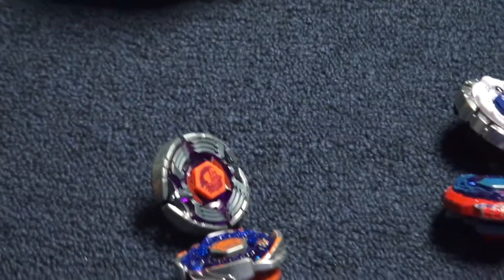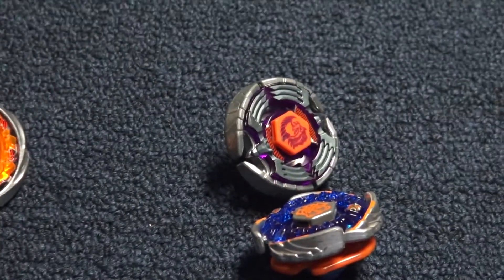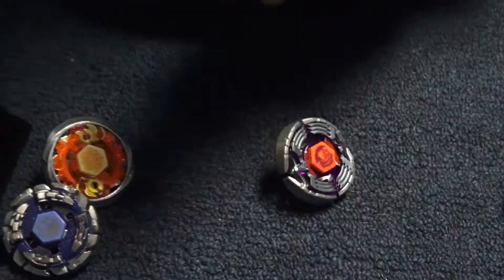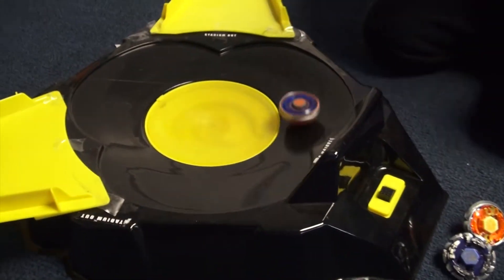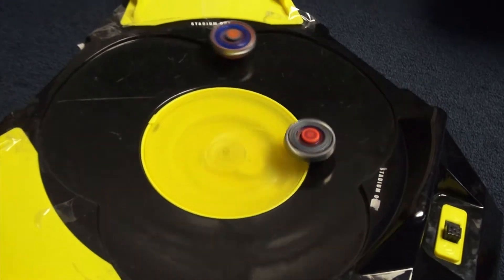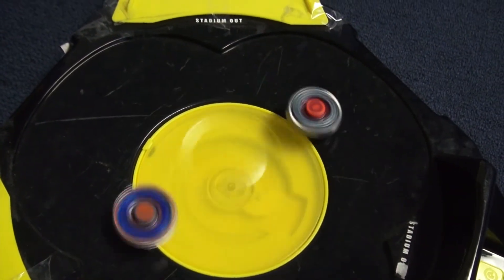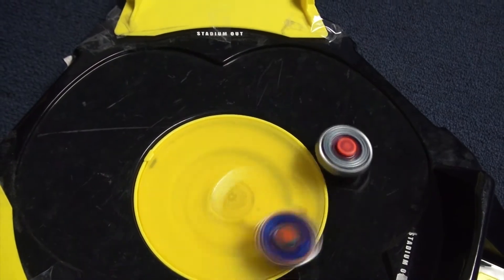Now the next match will be Earth Eagle Special Metal Wing Smash version versus Hyper Orso. Now, 3, 2, 1, let it rip! Now Orso is circling around Eagle. Looks like Orso made the first attack.